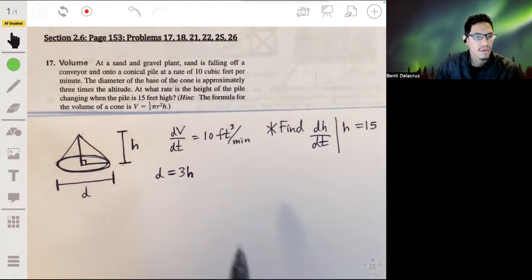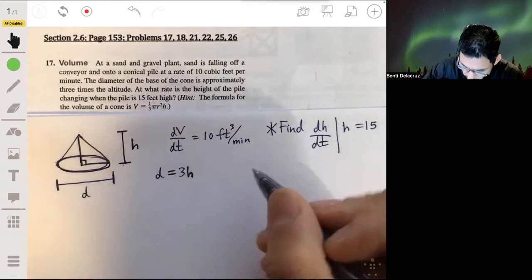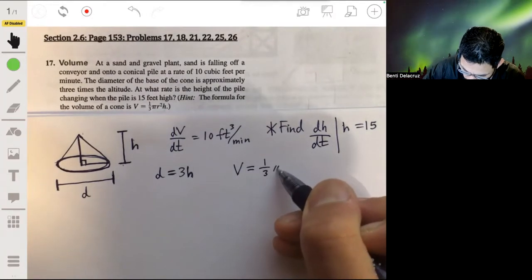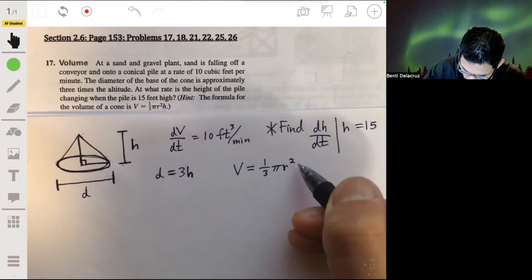Okay, so we're also given the equation for the volume. The volume of the cone is one third pi r squared times the height.